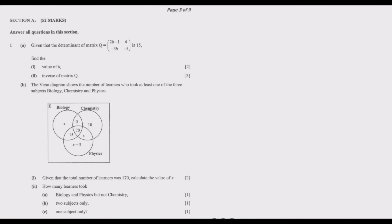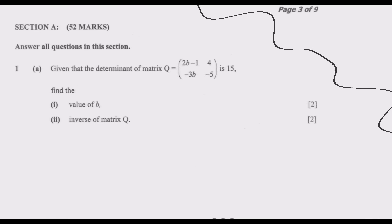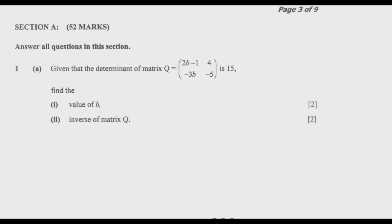Question one has two parts: Part A is based on matrices while Part B is based on sets. Let me zoom in so we can follow Part A and Part B clearly. Part A states: given that the determinant of matrix Q, which equals the matrix with top row (2B minus 1, 4) and bottom row (negative 3B, negative 3), is 15, find the value of B and the inverse of matrix Q.